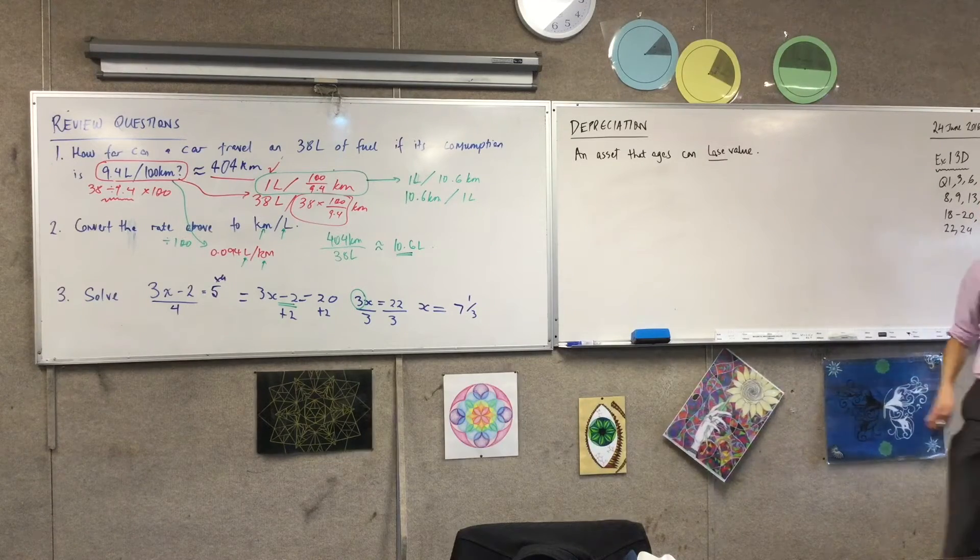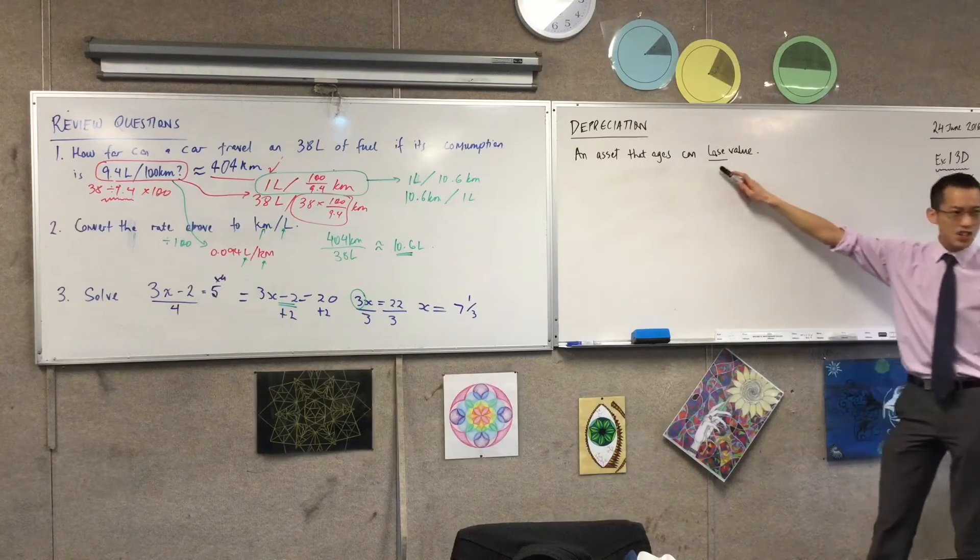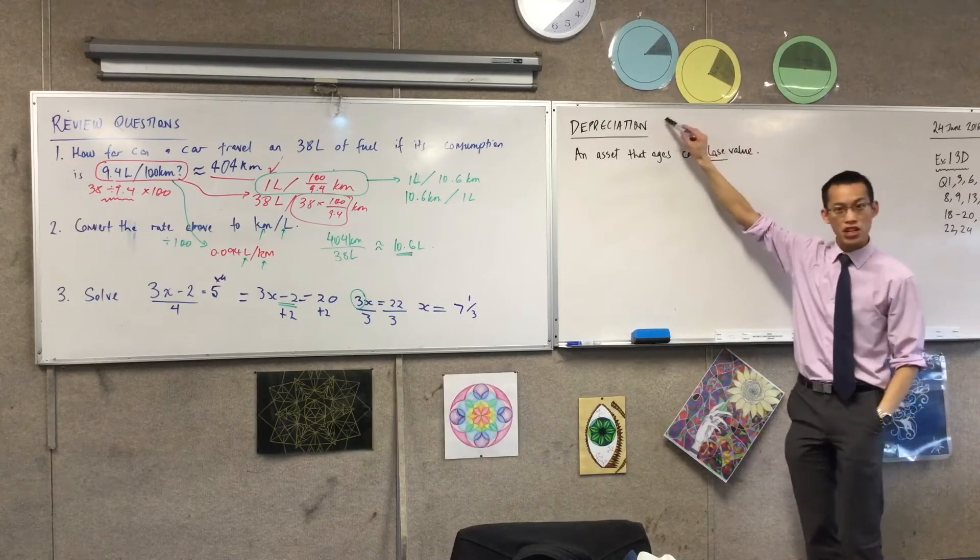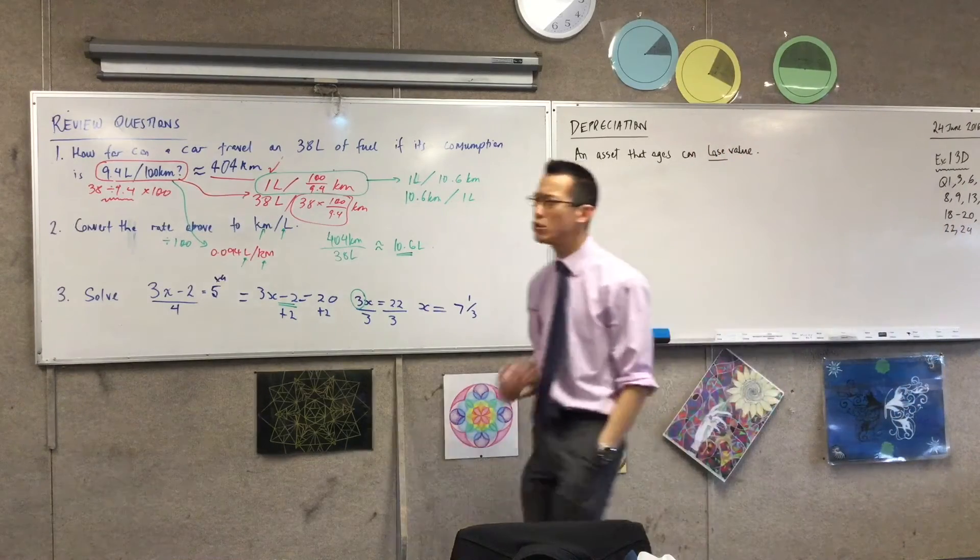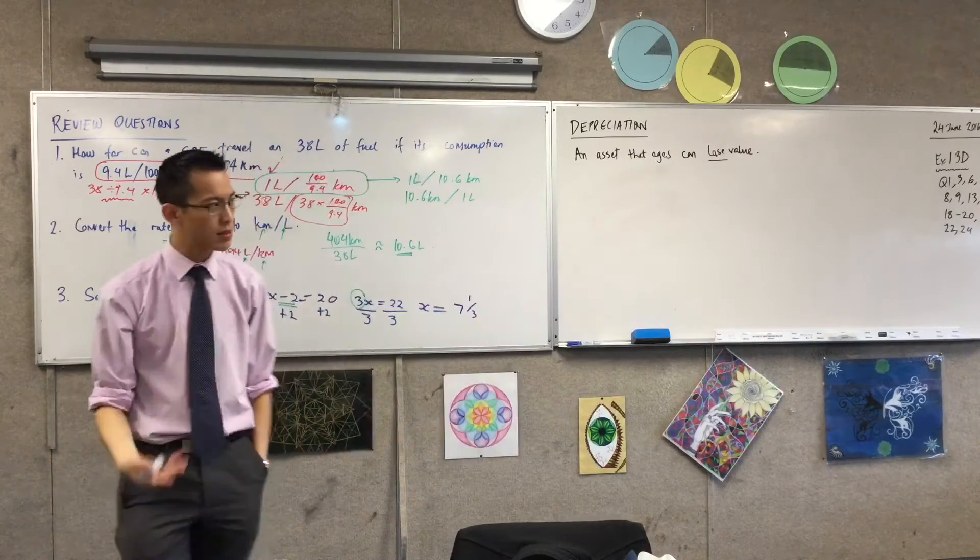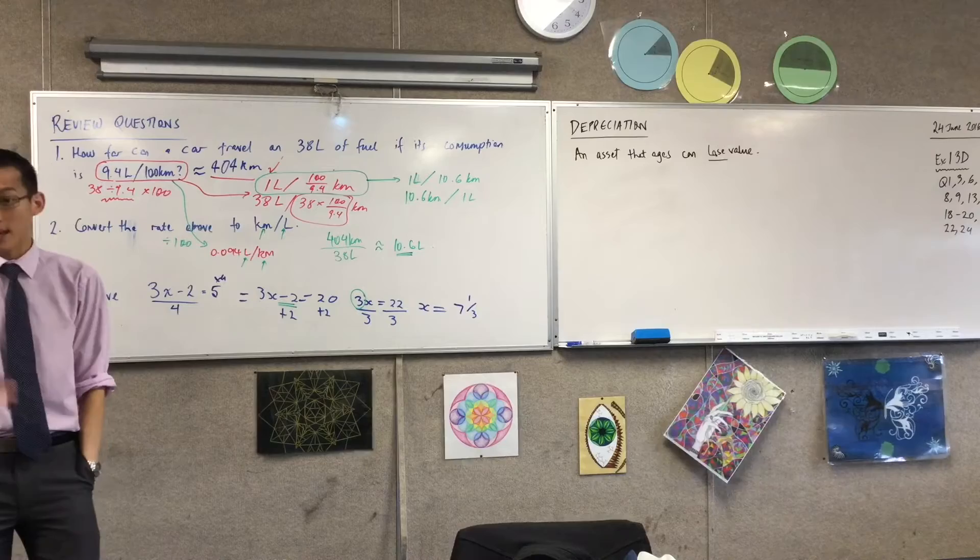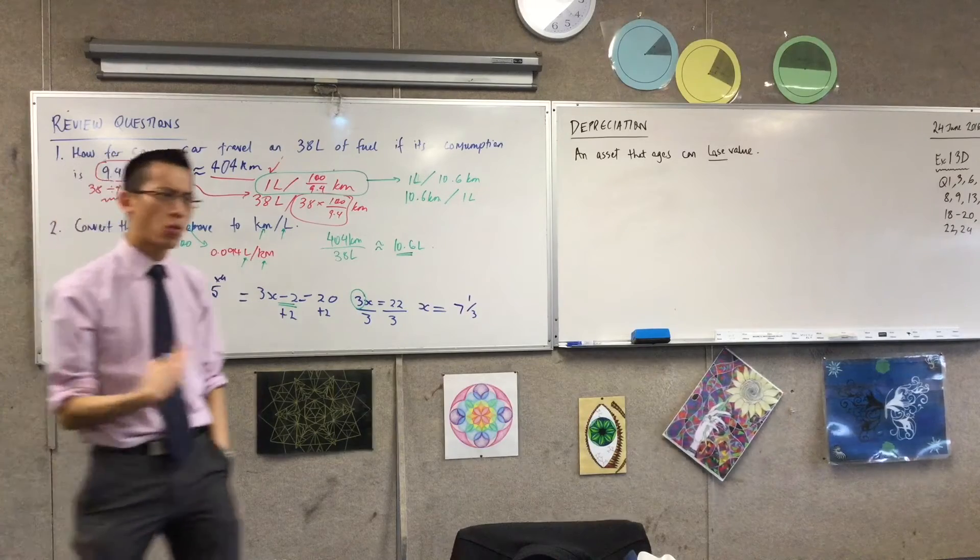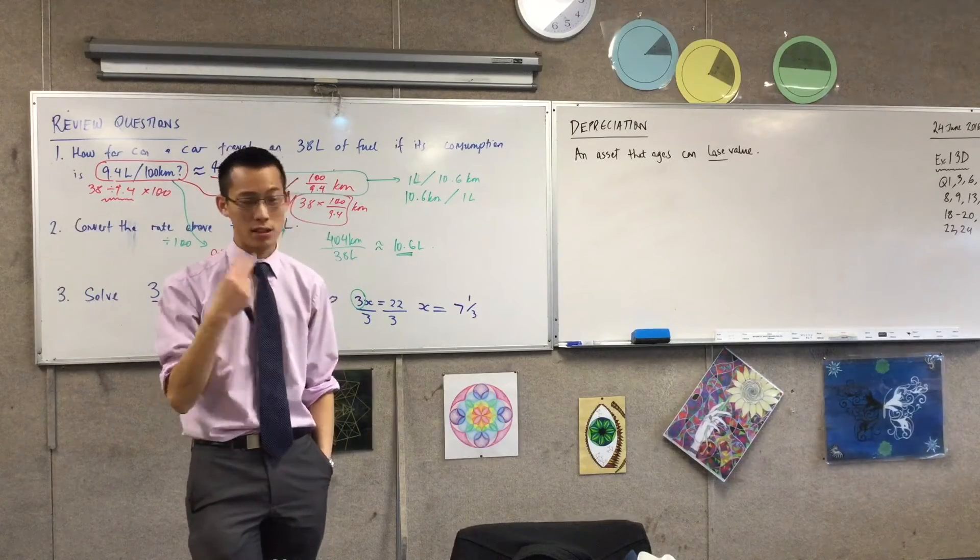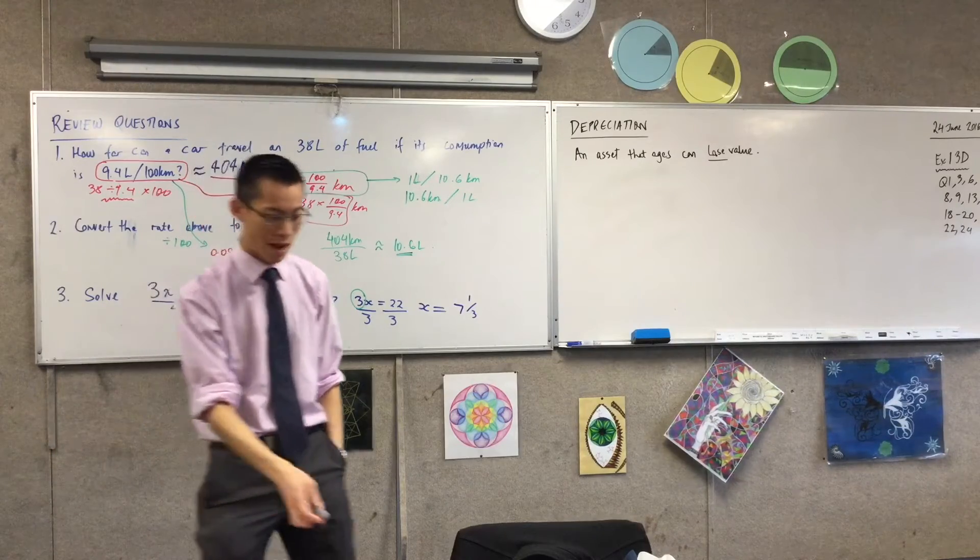Now, I want to ask the question, right? An asset ages, it loses value, we call it depreciation. We're going to look at how do you work out what its value is. But my question to you guys is, why does anyone care? Like, yes, it does do that. But why would we actually want to know what the number is? I can think of at least two big reasons.